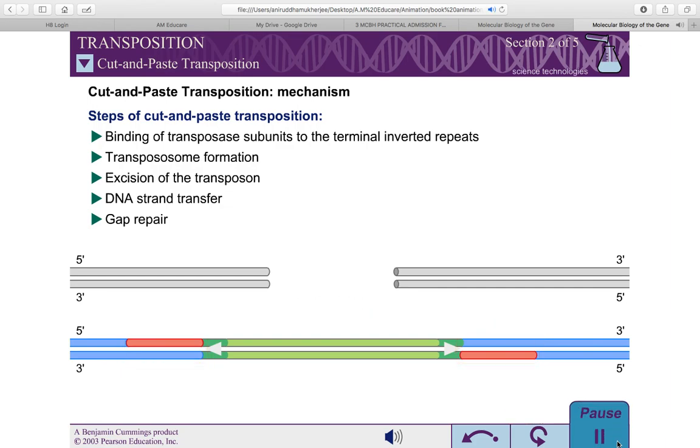The double-stranded breaks at the initial site of the transposon must also be repaired. These breaks can be repaired by homologous recombination or joined directly by the non-homologous end joining pathway.